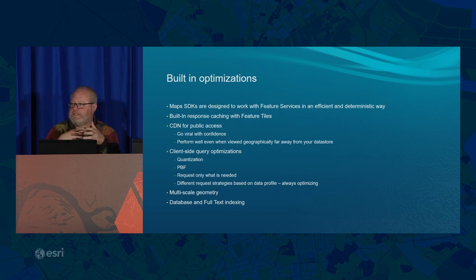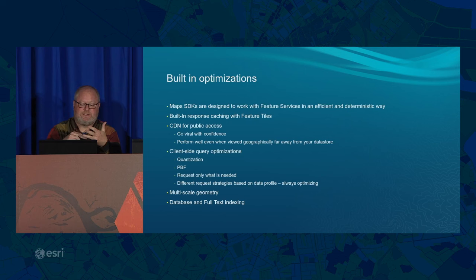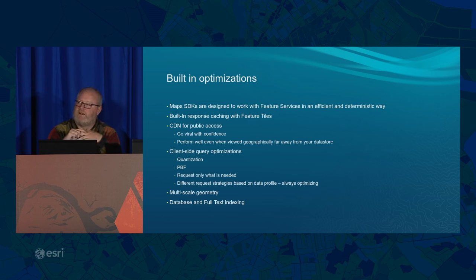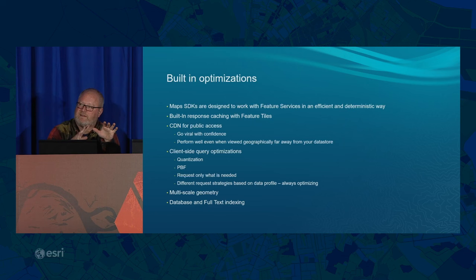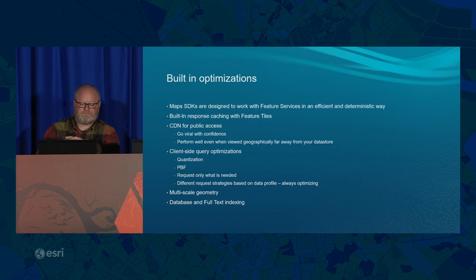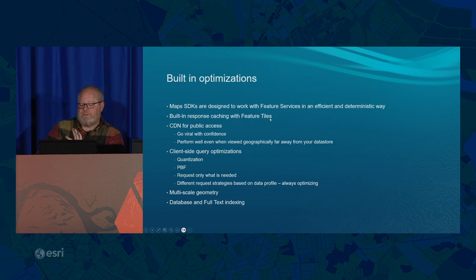The Maps SDK only requests the data that's needed. If you check this in Map Viewer, it only requests the fields needed for styling — the renderer or labels. Pop-up fields are requested on demand once you've clicked a feature. If you pick a field for smart mapping, the API just grabs those attributes for that field. This is highly optimized compared to the classic 3x Map Viewer, which always requested all fields all the time, making attribute-heavy layers slower.